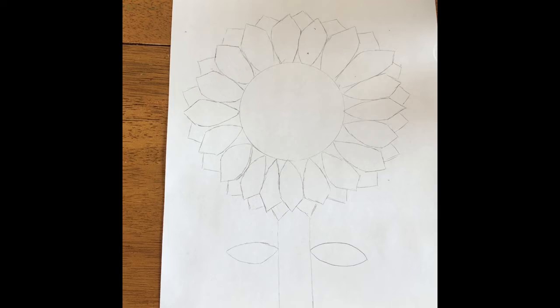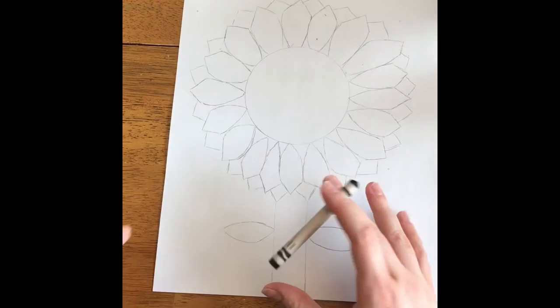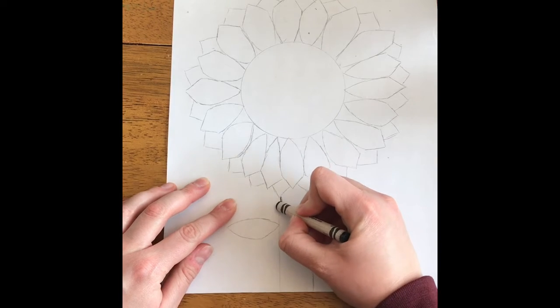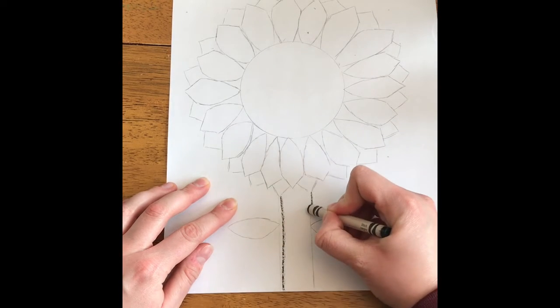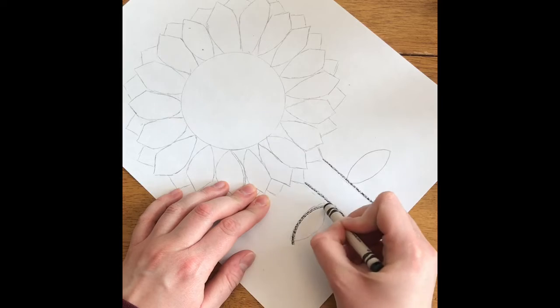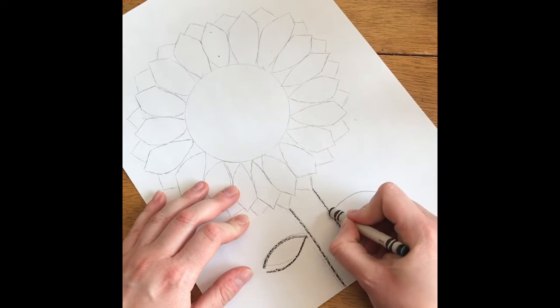Once you're finished drawing that, you could actually add another little sunflower if you want. Or you can just skip that and start tracing your flower in black crayon, or marker, or color pencil, whatever you have at home.